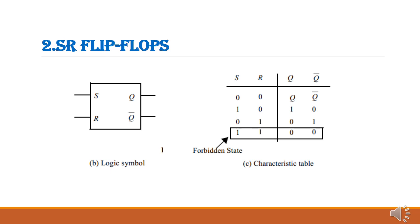Next, we look at the logic symbol of the SR flip-flop as well as its characteristics table. S and R are the inputs, and Q and Q bar are the outputs. Whenever set S is equal to 1, you get 1 as the output. Whenever reset R is equal to 1, you get 0 at the output. When both inputs are 0, 0, the previous state outputs Q and Q bar are maintained. When S equals 1 and R equals 0, Q equals 1 and Q bar equals 0. When S equals 0 and R equals 1, Q equals 0 and Q bar equals 1. The state 1, 1 is the forbidden state.